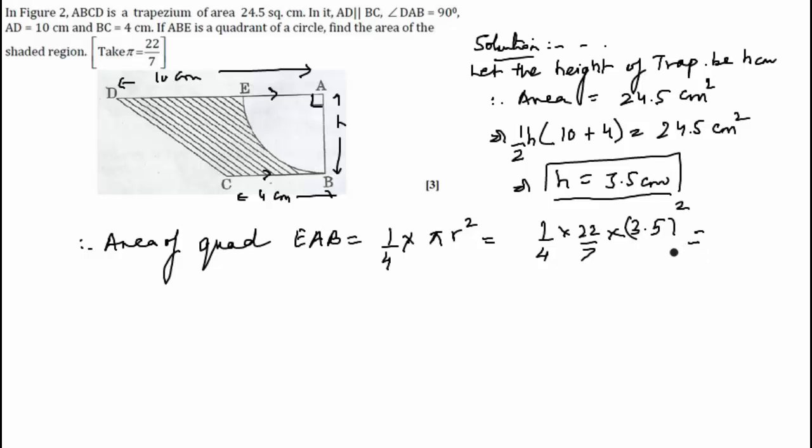That gives the value as 9.625 centimeter square on solving. So now we have area of quadrant, we have area of the trapezium which is given to us, so we can find out area of the shaded region.